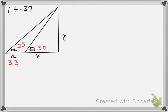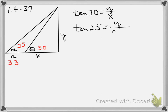This allows us to use trig functions to calculate the unknown y. We use the fact that the tangent of 30 degrees is opposite over adjacent, which is y over x. We can also calculate that the tangent of 25 degrees is y over the adjacent, which is a plus x. We know that a is 3.3, so we'll put in 3.3 for a.